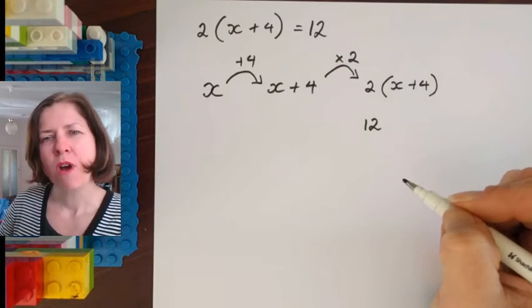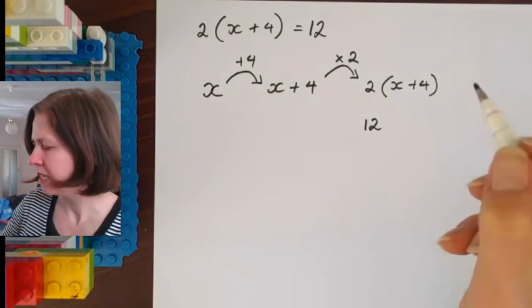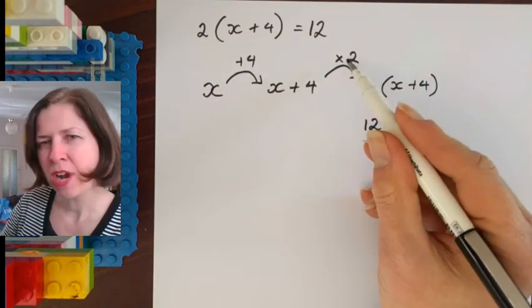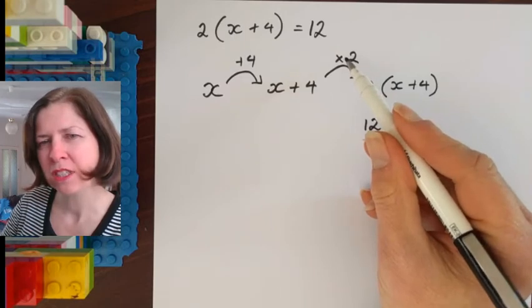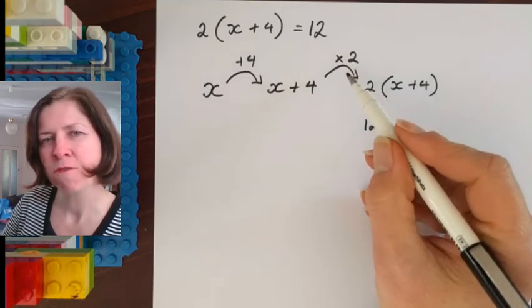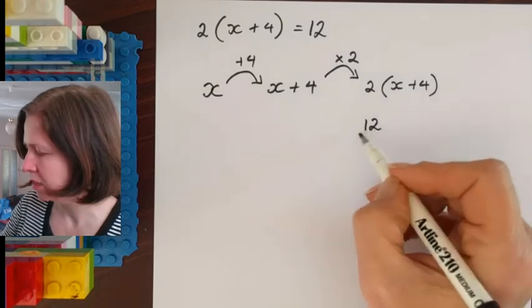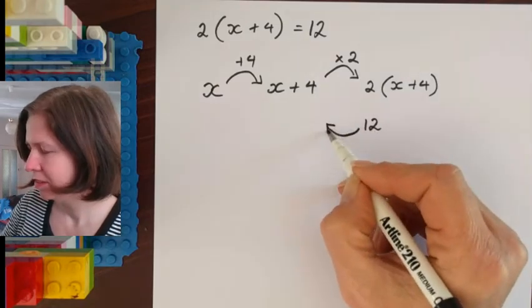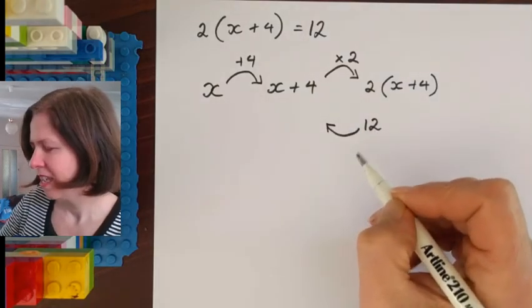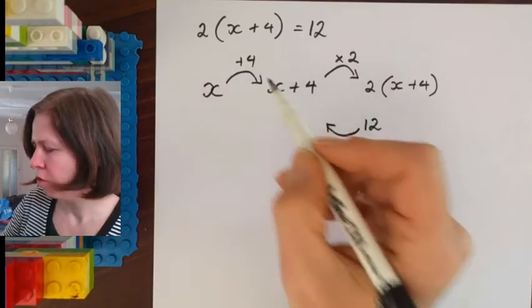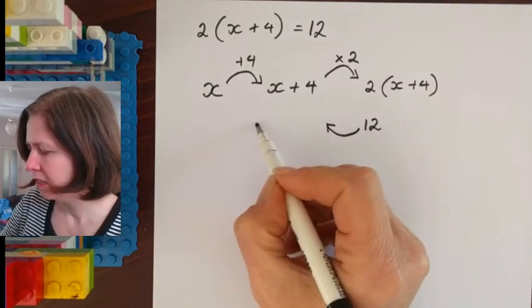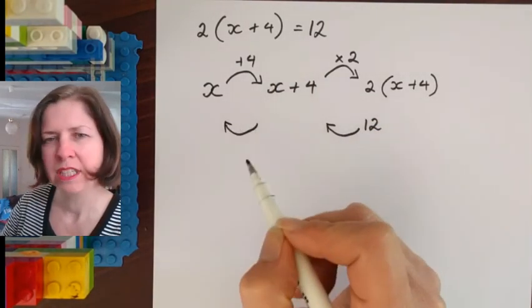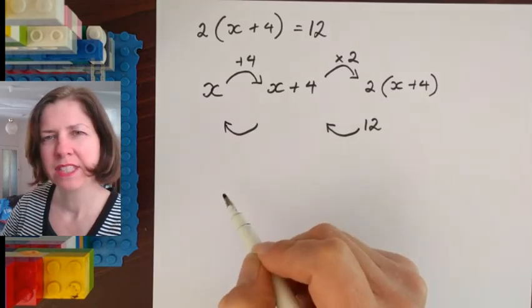So now I want to use backtracking to figure out what x is. So backtracking uses inverse operations. The inverse operation of times 2 is, you fill it in, and the inverse operation of plus 4 is, you fill it in. Take a moment.